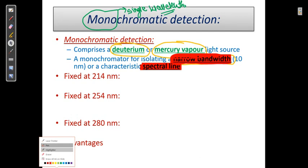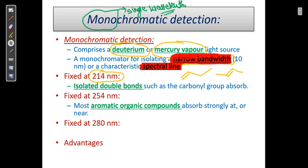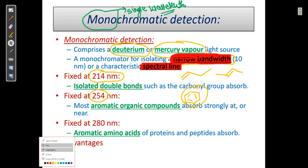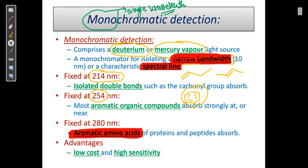The detector can be fixed at 214 nm, which detects isolated double bonds. At 280 nm, aromatic amino acids are detected. Monochromatic detection is low cost and offers high sensitivity.